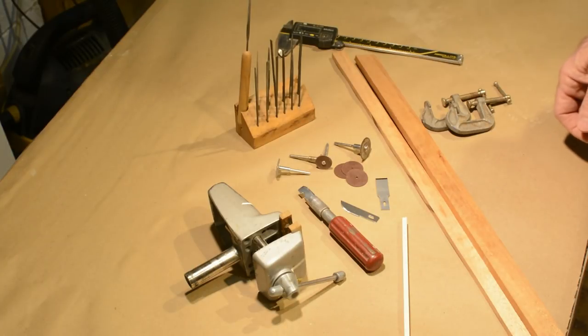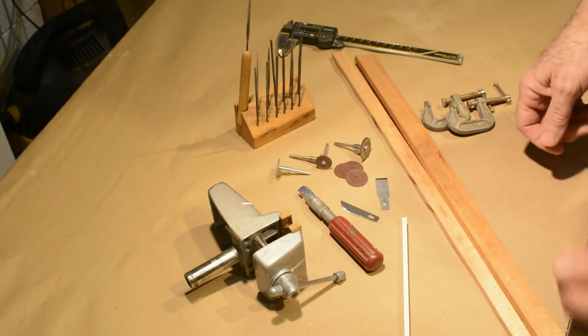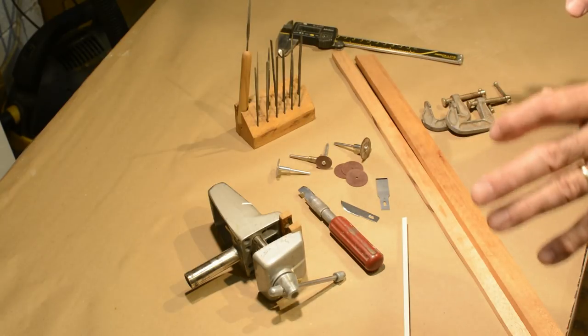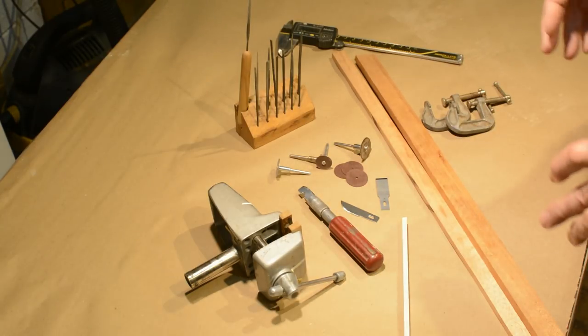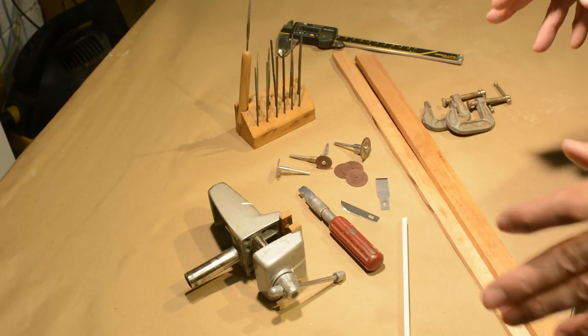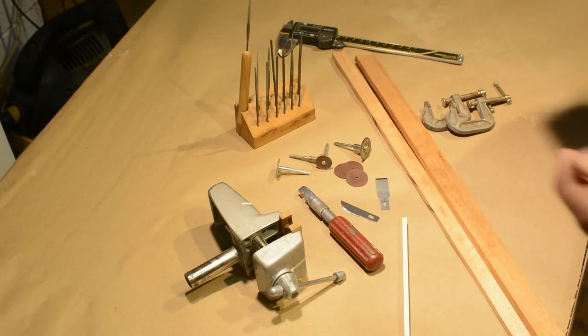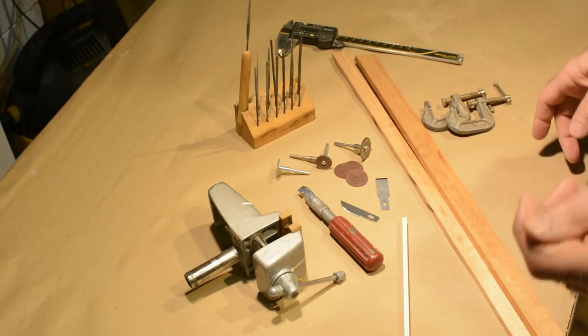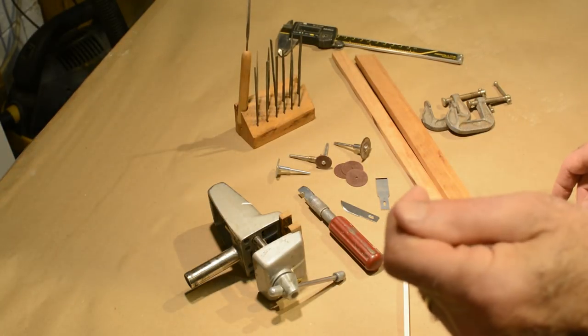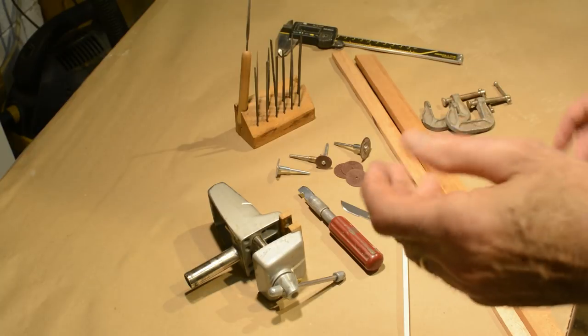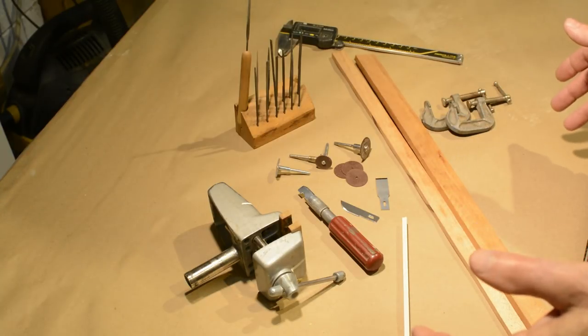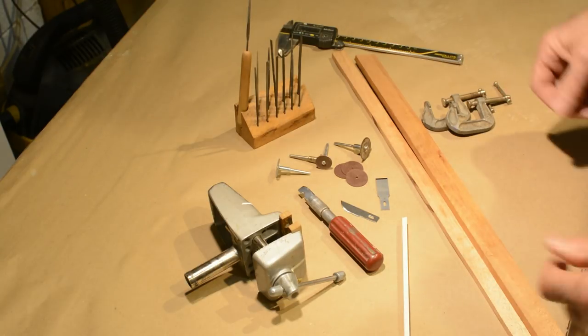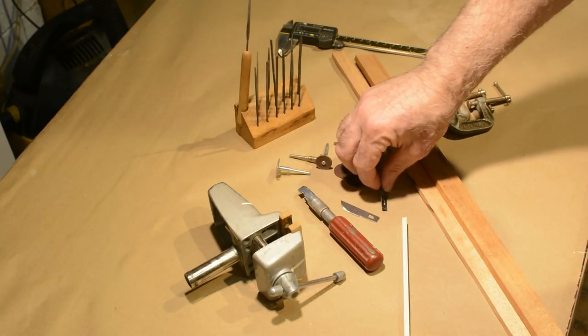This whole approach to making moldings using scratch stocks implies that you're going to need a few things. In a perfect world, you'd have everything that I'm about to mention, but even if you don't, you can still make this work and still get pretty good, pretty consistent results. First of all, you're going to need material to make the scratch stock with, the actual scraper.